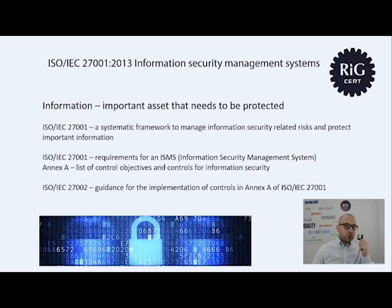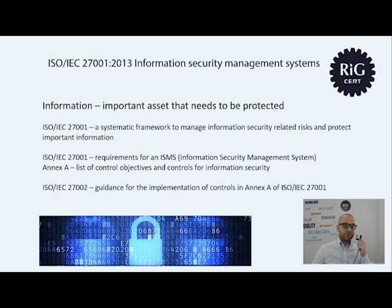But what is different for ISO 27001 compared to other management system standards? Well, it has an annex — it's called Annex A. And this annex is a comprehensive list of control objectives and controls specific to information security matters. There are 114 information security controls which are commonly accepted as covering most usual aspects of information security in most organizations.